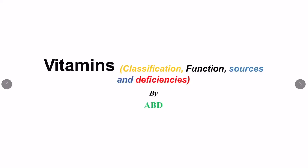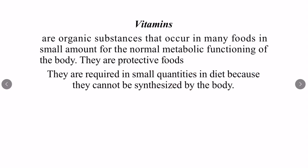Let's start with the definition of vitamins. Vitamins are organic substances that occur in many foods in small amounts, required for the normal metabolic functioning, normal growth and maintenance of good health. They are protective foods and since the body cannot synthesize them, we need to get them through diet.